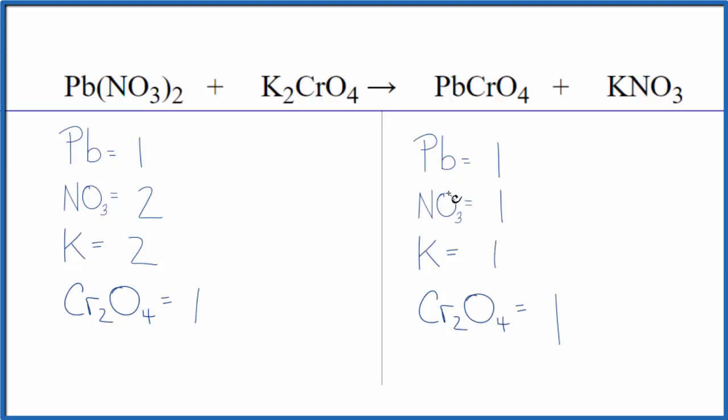If I put a two here, one times two, that's balanced. Nitrate one times two, I have two of those, and we're done. This equation is balanced.